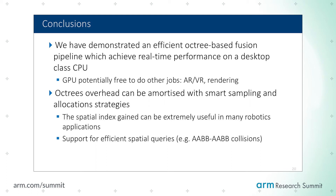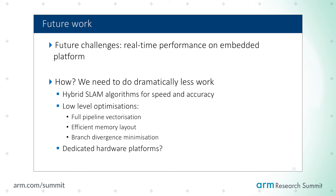As for future work, we are currently getting roughly 30 frames per second on desktop-class CPUs. If we want to move to real mobile processors we have to do much less work — we must optimize a lot of these algorithms. Technically that means both algorithmic improvements and low-level optimizations, which is where ARM can come into play: full pipeline vectorization, efficient memory layout, and branch minimization. And why not dedicated hardware platforms? Although these algorithms are a moving target because they're evolving very fast, people are looking into dedicated hardware for this kind of reconstruction and they are very well suited for it.